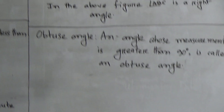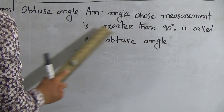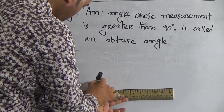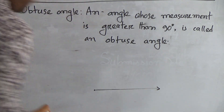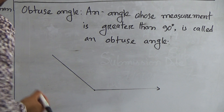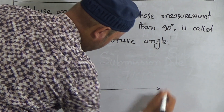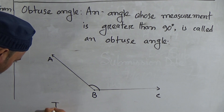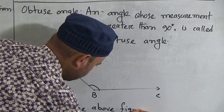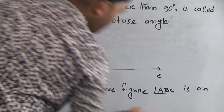Now go to the next one, which is obtuse angle. An angle whose measurement is greater than 90 degrees is called an obtuse angle. Similarly, to draw an obtuse angle, first of all you have to draw a ray from the starting point, then draw another ray this way. Call this point A, this point B, and this point C. In the above figure, angle ABC is an obtuse angle.